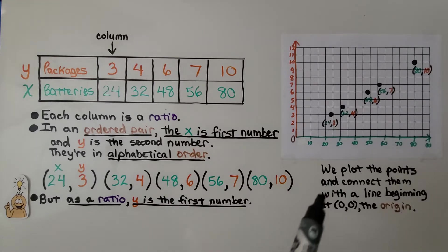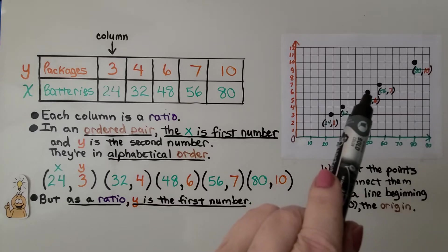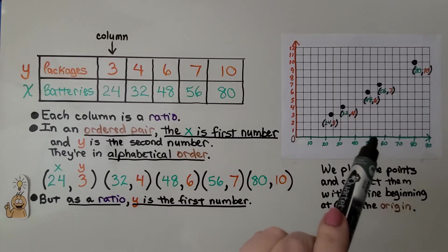For 48, 6, it's going to be a little bit before 50, because it's 48, and then it's going to be on 6. Then we do 56, 7. That's going to be a little bit past 55, which would be this line. And it would meet at 7.